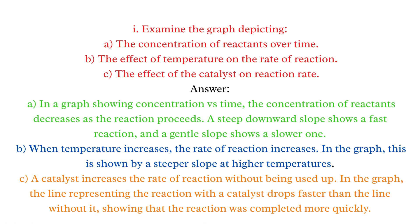Long Questions. Q1: Examine the graph depicting (a) concentration of reactants over time, (b) effect of temperature on rate, and (c) effect of catalyst on reaction rate. Answer: (a) Concentration of reactants decreases as the reaction proceeds; a steep downward slope shows a fast reaction. (b) Higher temperature produces a steeper slope. (c) The line with a catalyst drops faster, showing the reaction was completed more quickly.